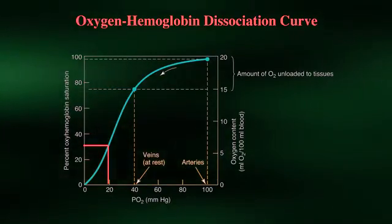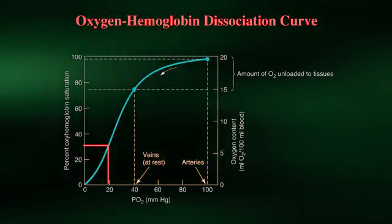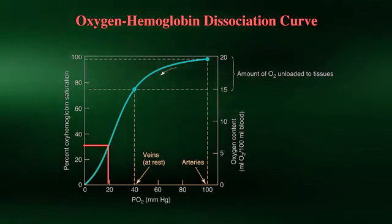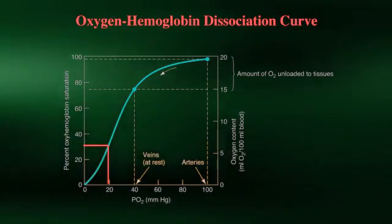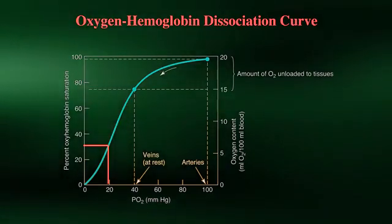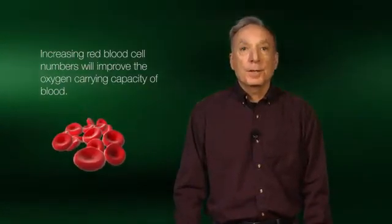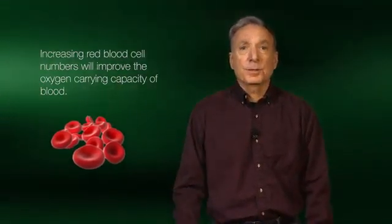During exercise, a decrease in pH, or metabolic acidosis, plus an increase in body temperature, will facilitate the unloading of oxygen off hemoglobin into muscle. Also during exercise, the partial pressure of oxygen in the working muscles can drop to 20 mmHg, resulting in an even greater unloading of oxygen from hemoglobin into muscle. Not surprisingly, increasing red blood cell numbers will improve the oxygen-carrying capacity of blood. This occurs to some extent as a result of endurance training. Further, this is the concept behind the performance-enhancing technique of blood doping, which will be discussed in Module 3.